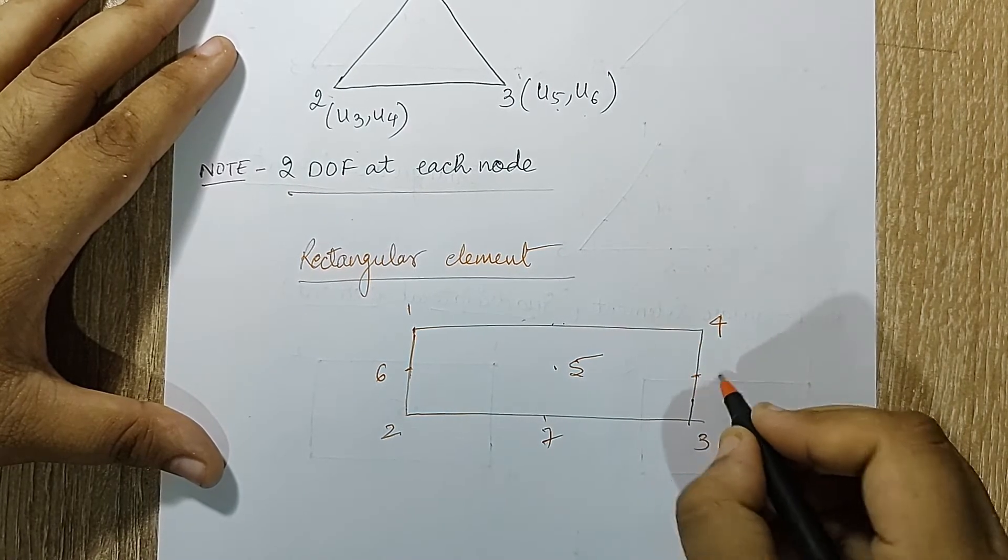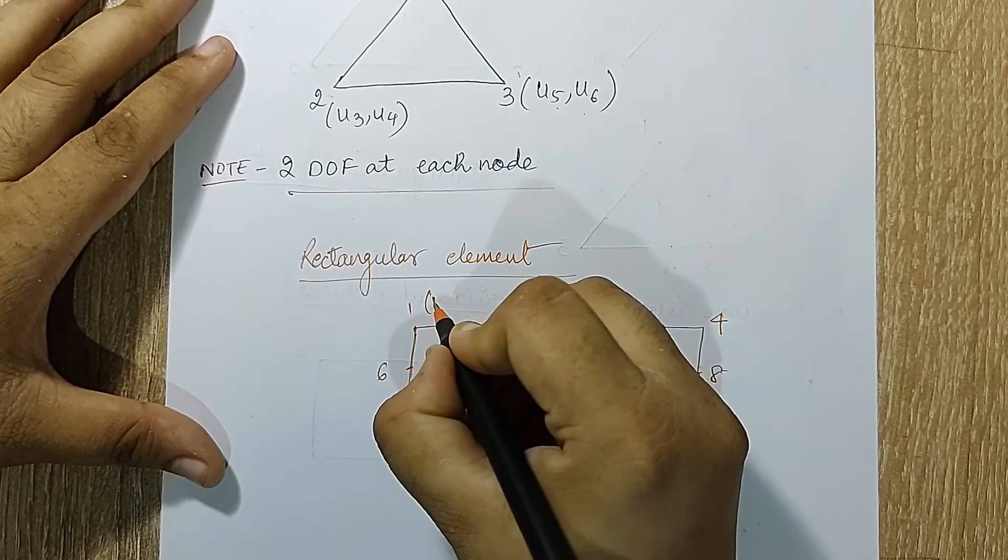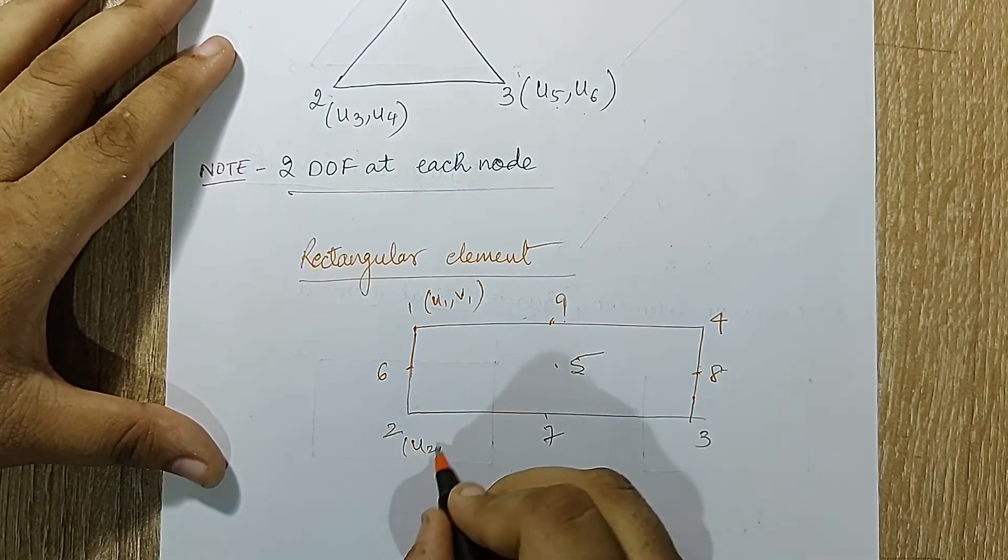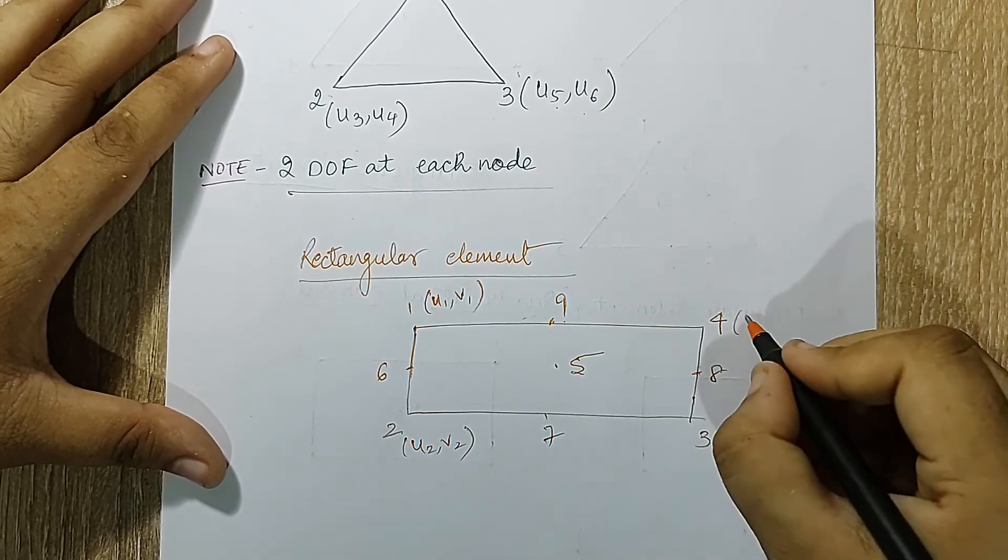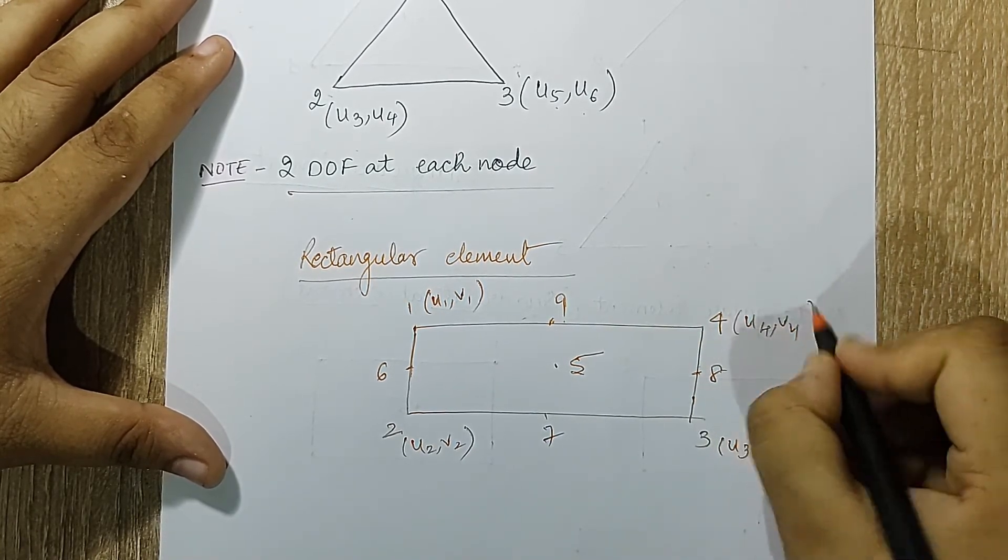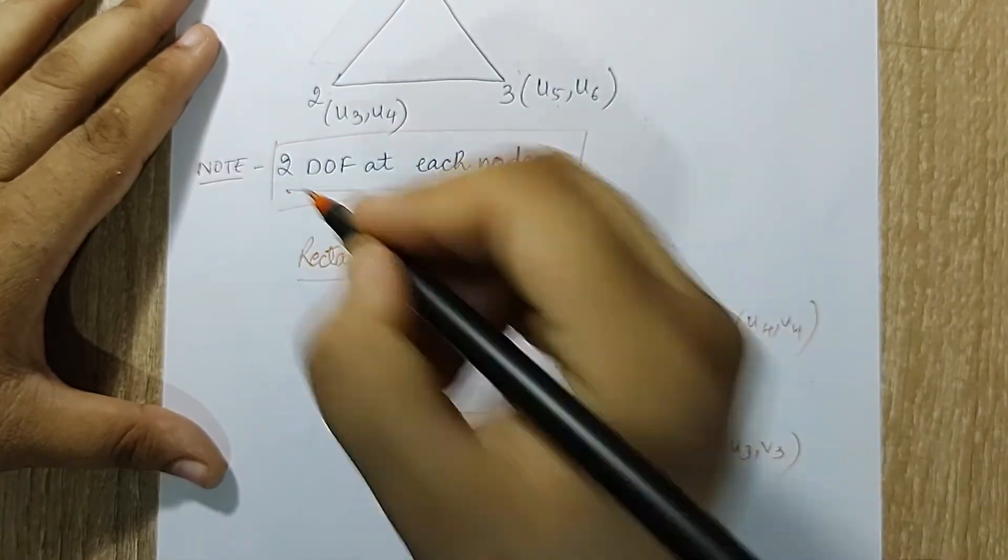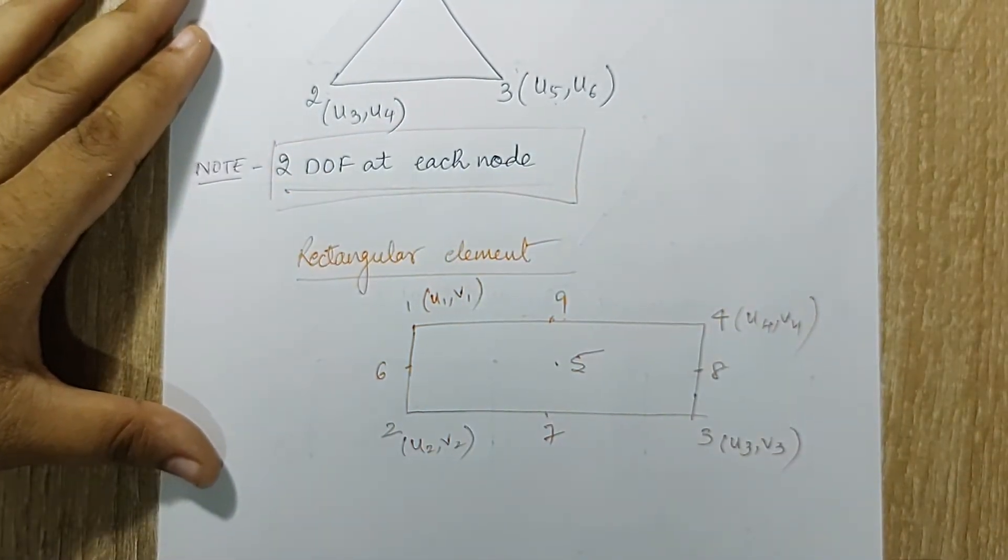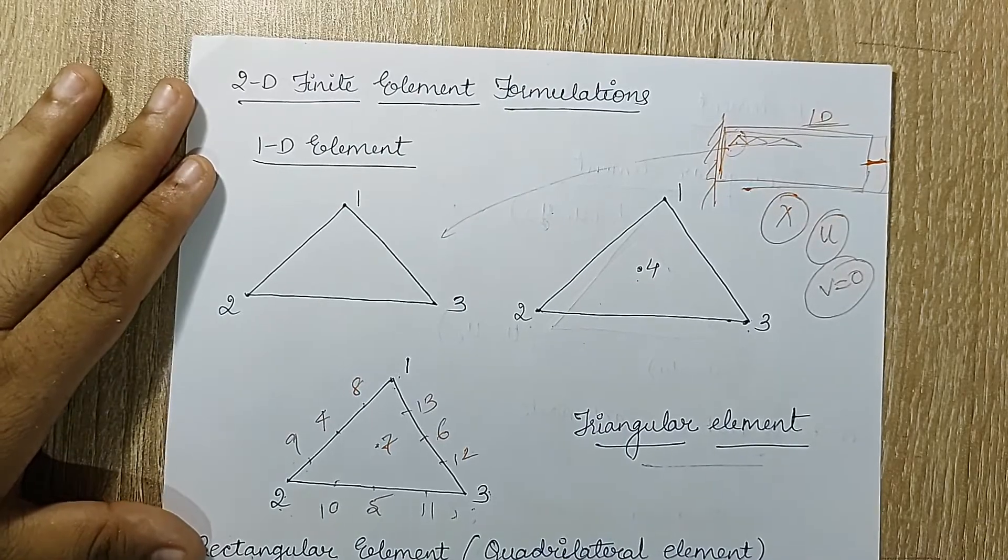At each node I'll have u1, v1, u2, v2. I'll have u3, v3, I'll have u4, v4, and this will continue for each node. This sentence is very important: there are two degrees of freedom at each node.